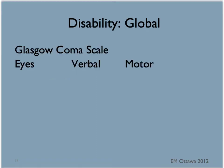Another global score we use is the Glasgow Coma Scale, or GCS. It measures three responses: eyes, verbal, and motor. This again measures the patient's response to outside stimuli. Eye scores are out of 4, verbal scores are out of 5, and motor scores are out of 6.